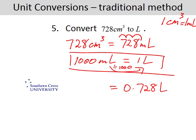One, two, three. Because you're dividing by a thousand, the number gets smaller. So in other words, 728 cubic centimetres is the same as 0.728 litres.